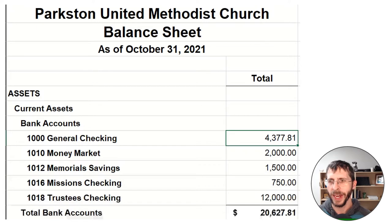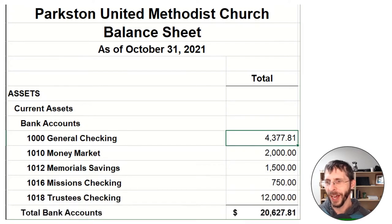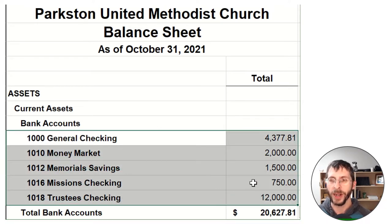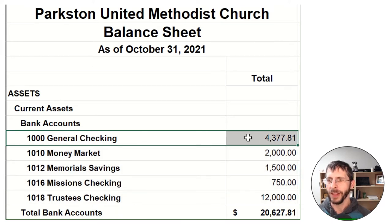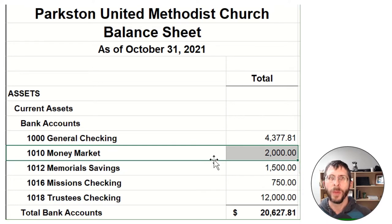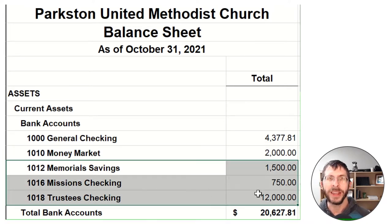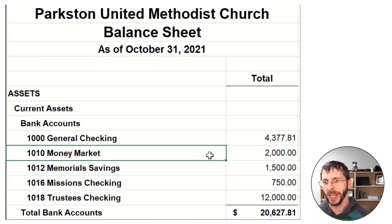Let's start by looking at an example balance sheet. I have a fake one I made up for Parkston United Methodist Church. Let's start looking at first the asset section. In this fake balance sheet, you can see a bunch of bank accounts: general checking, money market savings, memorial savings, and a couple other checking accounts. A lot of times a church would split out their money like this in order to better keep track of it — to keep your memorials separate from your mission, separate from your trustees. At least this way you keep it separate, especially if you're not using your equity section well to track these different restrictions.